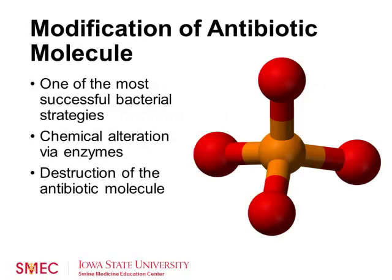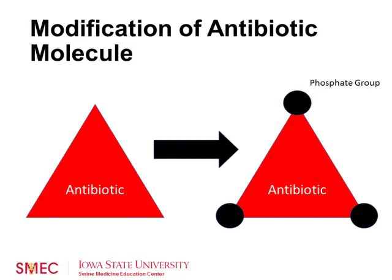Modification of the antibiotic molecule is one of the most successful bacterial strategies. Through chemical alteration via enzymes, the bacteria produces enzymes that make chemical changes to the antibiotic molecule — often by adding a compound such as a phosphate group — decreasing the drug's binding ability to its target. They can also produce enzymes that destroy bonds, leading to antimicrobial destruction. Once the phosphate group is added inside the cell, the shape and makeup of the antibiotic is changed so it can no longer bind to the target.